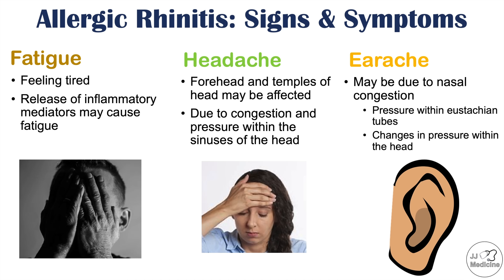Regarding differences between the two types: seasonal allergic rhinitis is more likely to present with sneezing, runny eyes, and runny nose, whereas perennial or chronic allergic rhinitis more commonly features post-nasal drip and cough. If you want to learn more about allergic rhinitis, including risk factors and ways it's diagnosed and treated, please check out my full lesson on this topic. Please like and subscribe for more lessons like this one — thanks for watching!